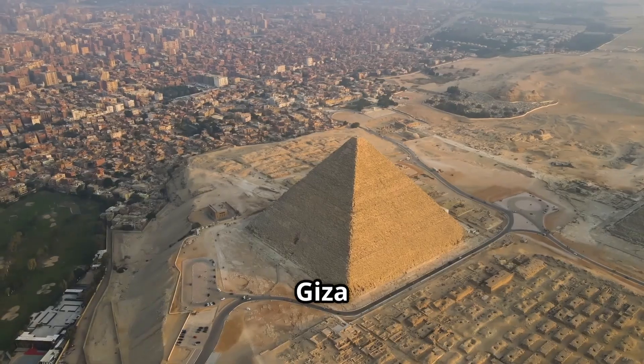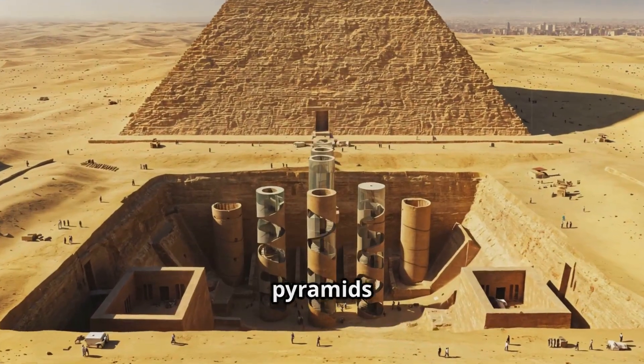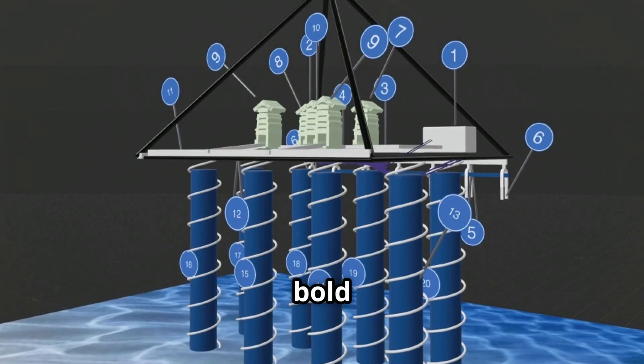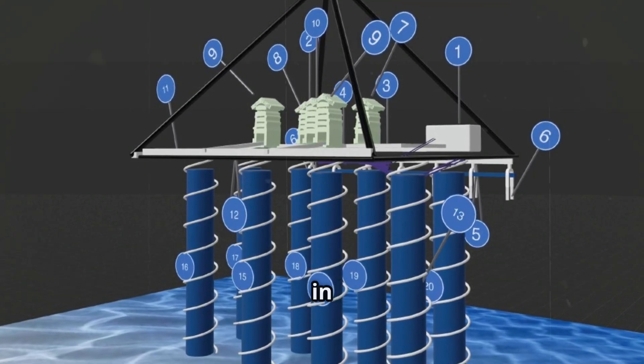Massive structures beneath the Giza plateau extend below the Giza pyramids for approximately two kilometers beneath ground zero, a bold claim by a team of researchers announced last week in Italy.